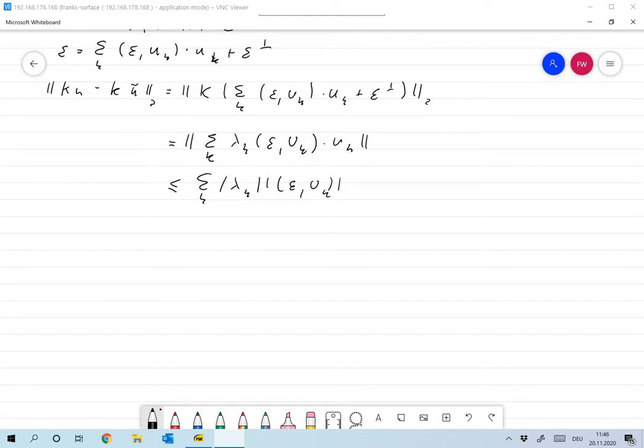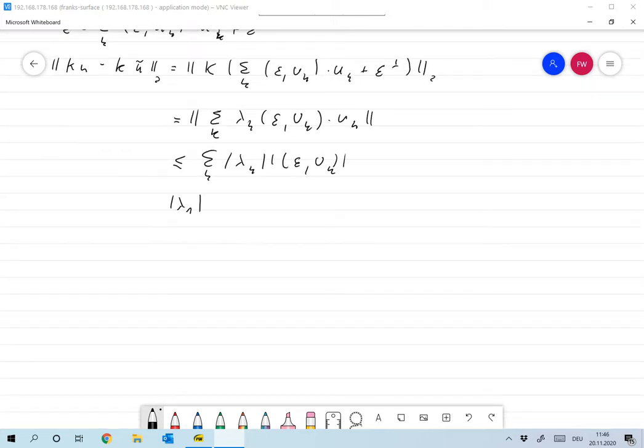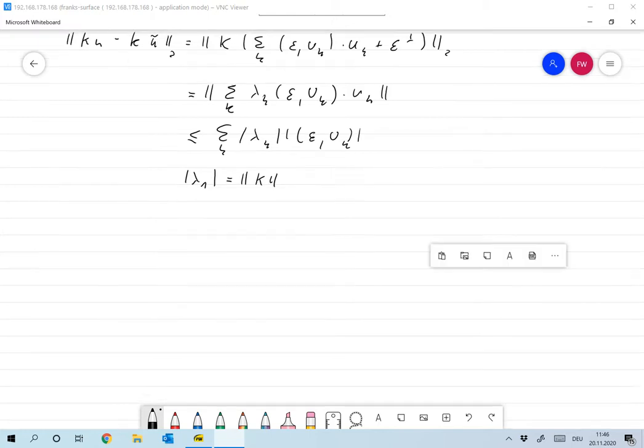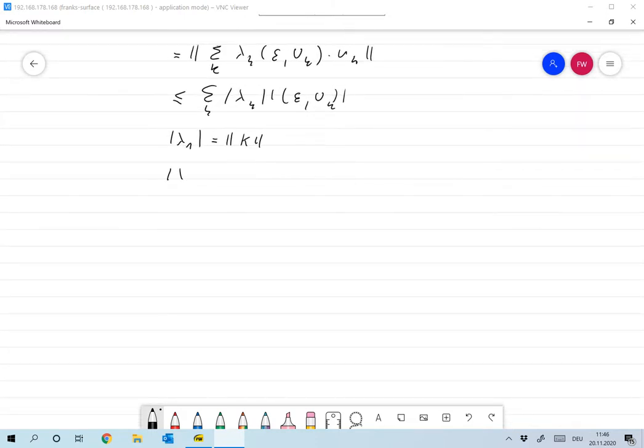Okay, now this gives us much more insight in how the error behaves. First of all, as I've just noted, if we make an error that's actually in the null space of K, that has no effect. If we make an error with respect only to one eigenvector, then for example, let's say we're getting the scalar product of epsilon with u1 wrong, then the amplification factor is lambda 1. And absolute value of lambda 1, we already know that's nothing but the operator norm of K. So that's actually the worst thing that can happen.